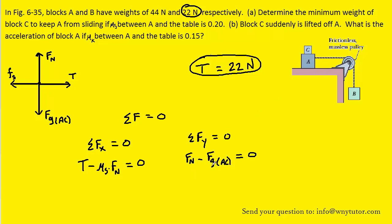What that means is that the force of gravity is going to be a combination of the 44 Newtons contributed by block A and then the unknown number of Newtons contributed by block C. So we can write this in the following manner: the force of gravity.